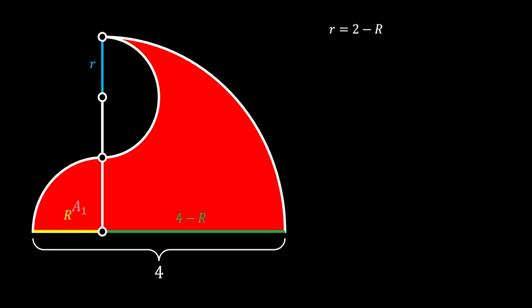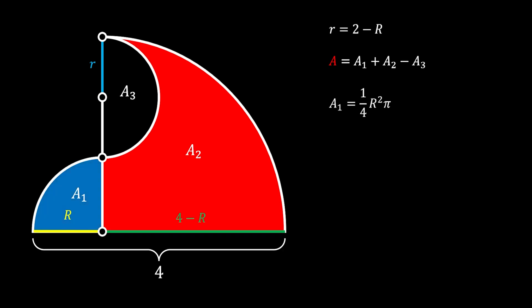Now let's mark all our circular segments as A1, A2, and A3. The overall red shaded area must be equal to the sum of the areas of both quarter circles minus the area of the half circle. Let's start with the area of our smallest quarter circle. It would be equal to one-fourth of R squared times pi.